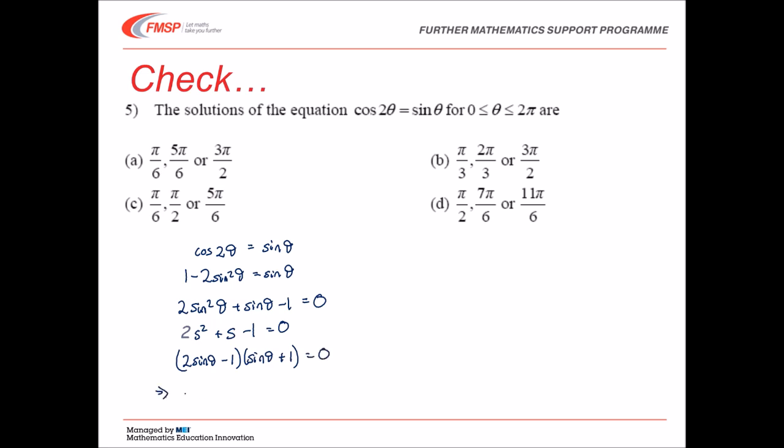2 sin theta minus 1 times sin theta plus 1 equals 0. So from that we get that sin theta is equal to 1 half, or sin theta is equal to minus 1. And that means that theta is equal to pi over 6, or 5 pi over 6, or 3 pi over 2.